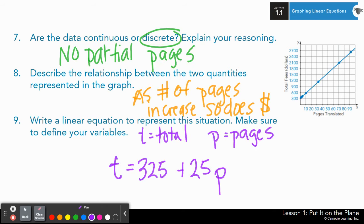All right, let's compare answers for seven. The data is discrete because if you remember in the getting started, Ms. Jackson does not translate partial pages, whole and full pages only. So those pages translated can only be whole numbers.